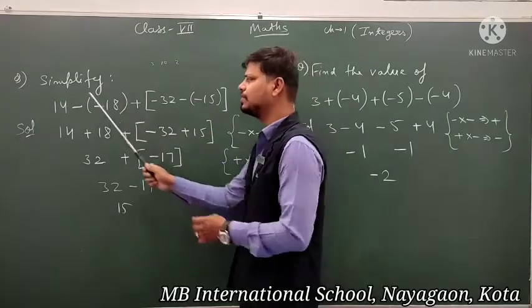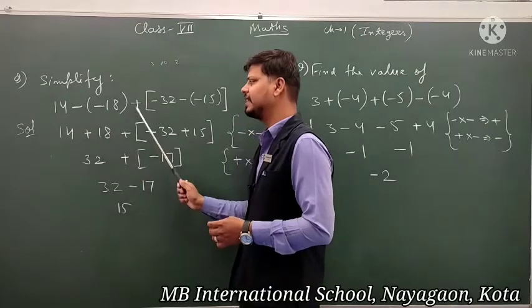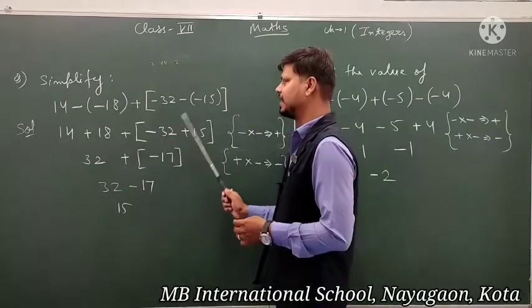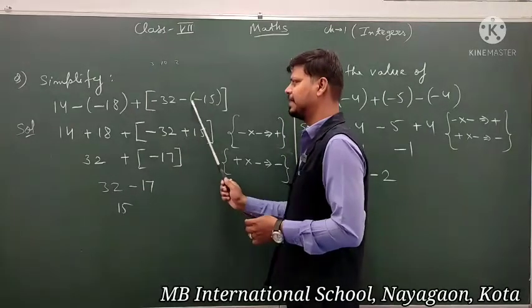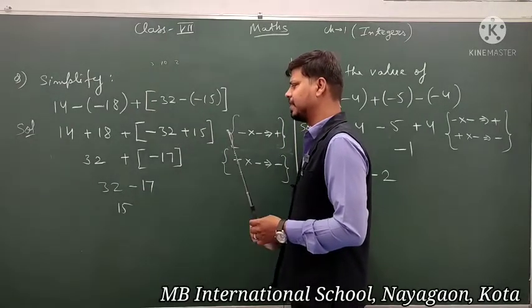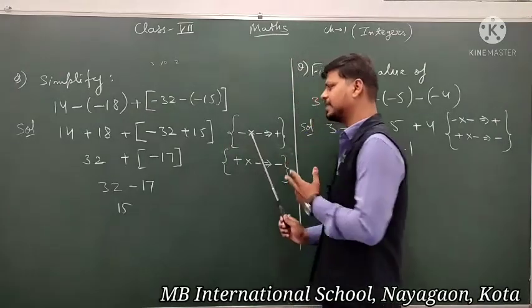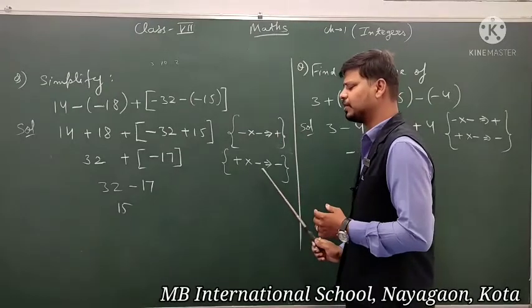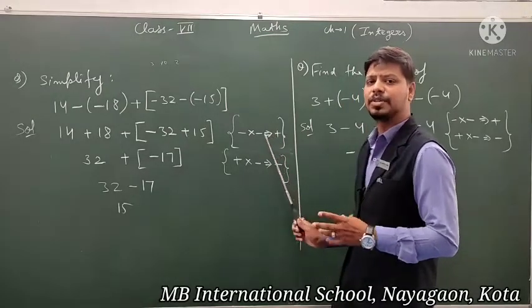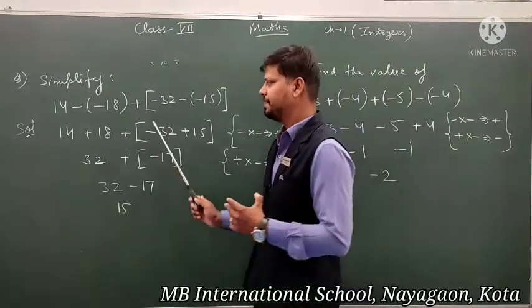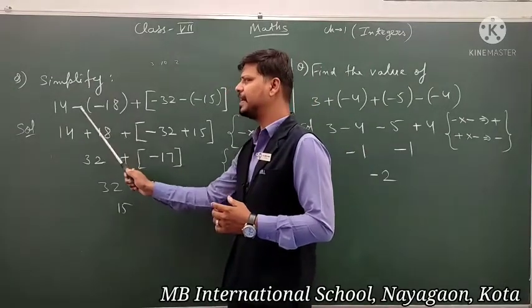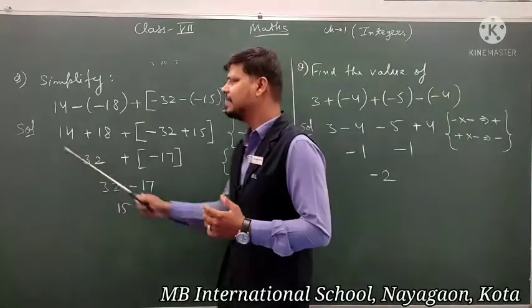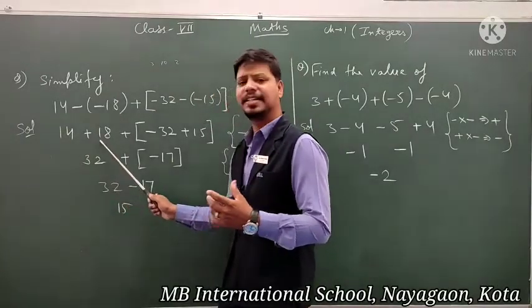So plus plus 18 — plus 18 stays as it is. Now in the bracket, minus 32 and minus minus multiply gives plus. So minus minus becomes plus. When the same sign means multiply, then plus; add and minus minus circle.